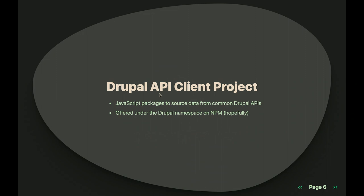What we're going to be talking about is the Drupal API client project. The Drupal API client is a set of JavaScript packages to help source data from common Drupal APIs. The goal — it's definitely not something that is official by any means — but we're going to try to make a pitch for it: I hope that this can be offered under the Drupal namespace on NPM someday. We'll talk more about what that means and why I think it's important.